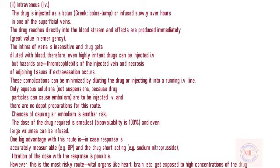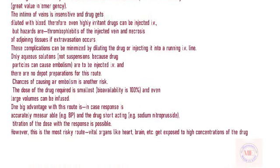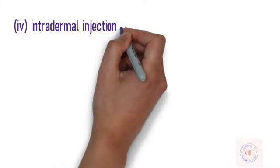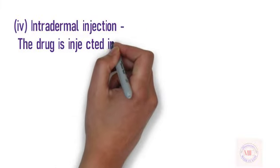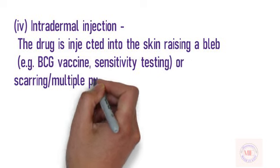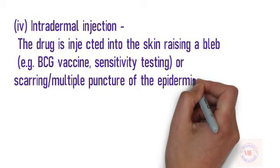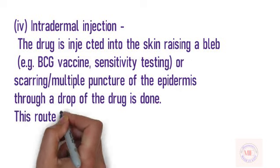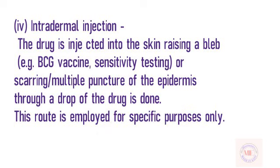However, this is the most risky route — vital organs like heart, brain, etc. get exposed to high concentrations of the drug. Intradermal injection: The drug is injected into the skin raising a bleb, e.g. BCG vaccine, sensitivity testing, or by scarring — multiple puncture of the epidermis through a drop of the drug. This route is employed for specific purposes only.